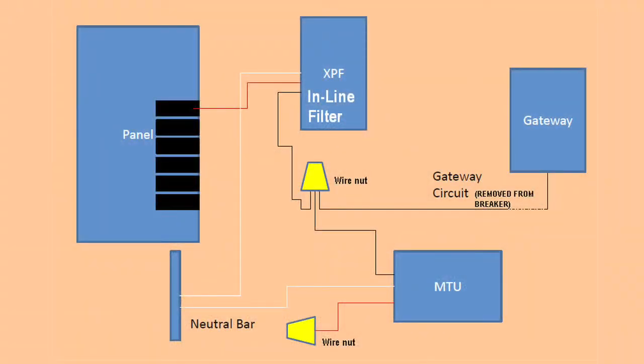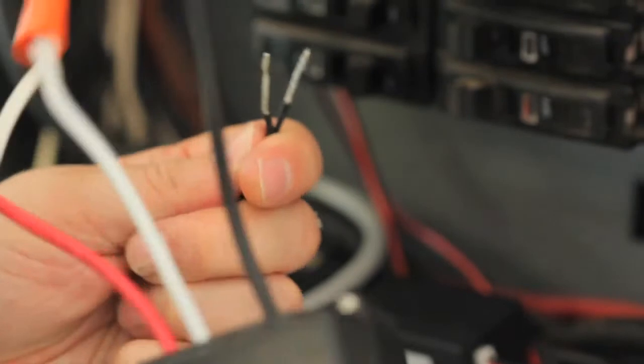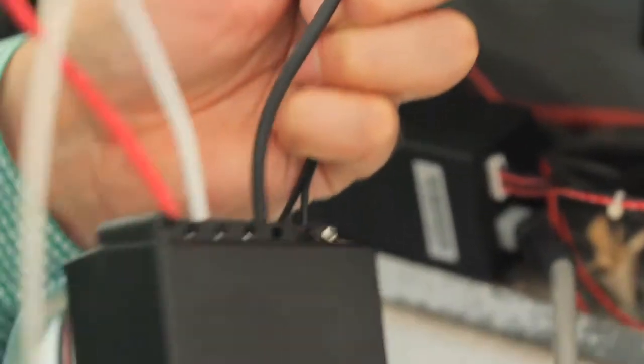For single panel installations, it's best to use the filter to isolate the TED system. For MTUs installed in multiple panels, you will need to power the MTUs from the same breaker to be able to isolate the TED system with an inline filter.